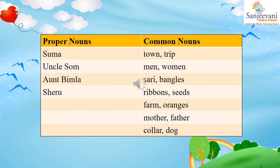Third sentence: 'There were many men and women.' Men and women are names of persons, like boy and girl. So we will write men and women both in the common nouns column.